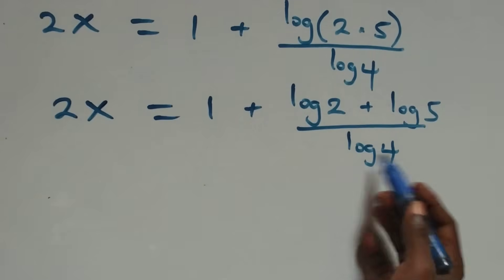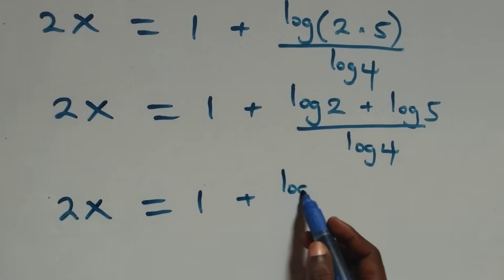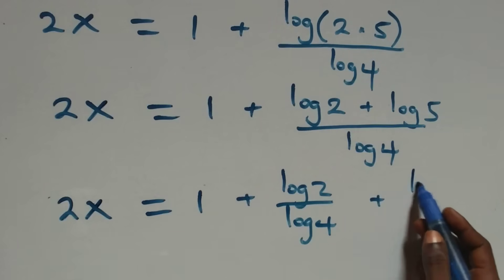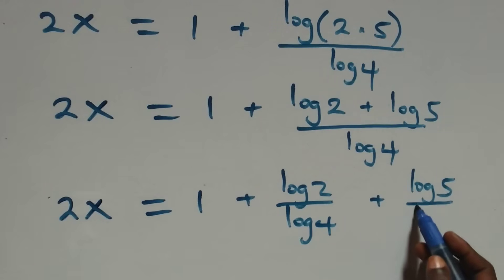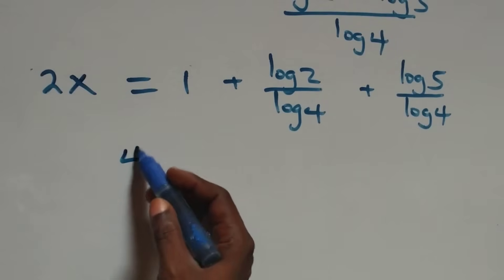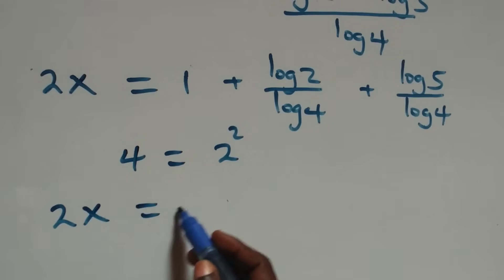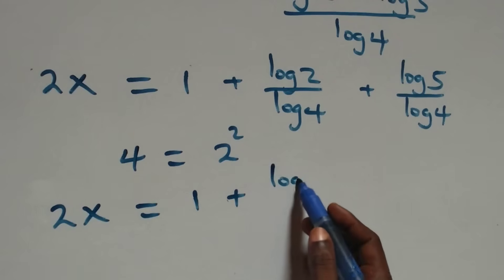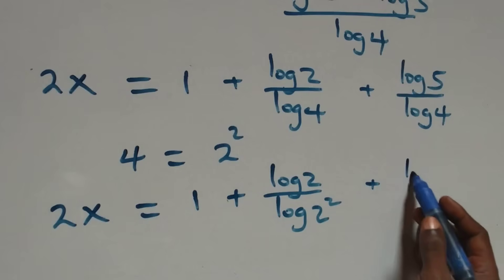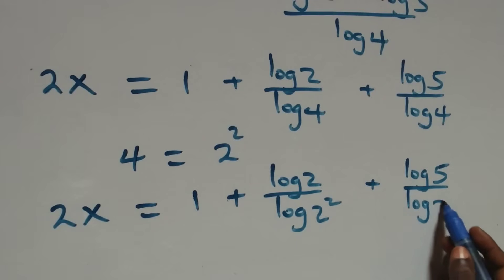We separate this into two fractions, and we have 2x equals to 1 plus log 2 over log 4 plus log 5 over log 4. We can write 4 as 2 times 2, which is the same as 2 squared. So what we have here becomes 2x equals to 1 plus log 2 over log 2 squared plus log 5 over log 2 squared.